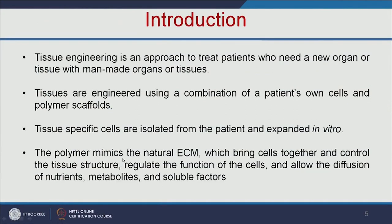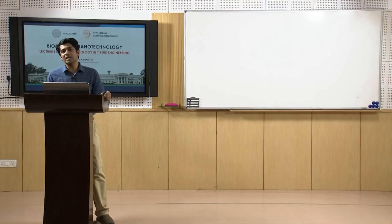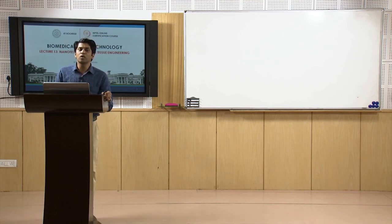The polymeric scaffold will mimic the natural ECM, that is the extracellular matrix, which brings cells together and controls the tissue structure and regulates the function of the cells. The scaffold acts like a support and will allow the cells to grow. It provides support like an extracellular matrix and also allows nutrients to permeate through the porous structure.